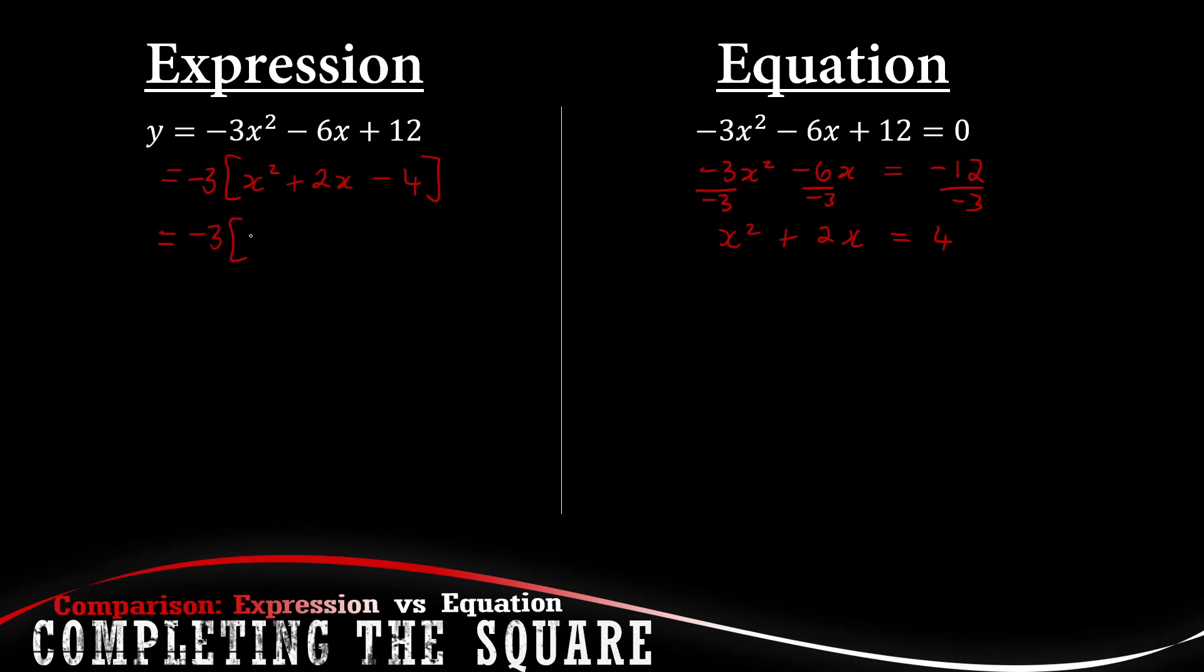Next up we are going to complete the square. So we have x squared plus 2x, then we add 2 over 2 squared and we subtract 2 over 2 squared minus 4. But what do we do with an equation? We are going to also add the 2 over 2 squared.